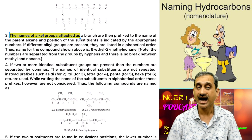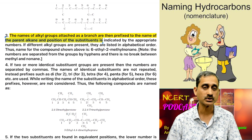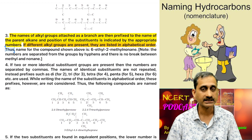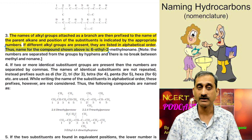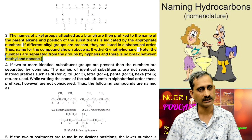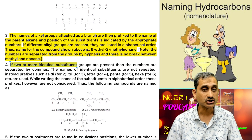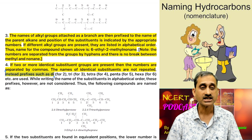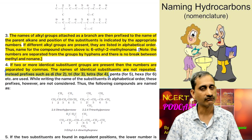The names of alkyl groups attached as a branch are then prefixed to the name of the parent alkane, and the position of the substituent is indicated by the appropriate numbers. If different alkyl groups are present, they are listed in alphabetical order. Thus, the name for the compound shown above is 6-ethyl-2-methylnonane — note that numbers are separated from the groups by hyphens and there is no break between methyl and nonane. If two or more identical substituent groups are present, the numbers are separated by commas, and prefixes such as di (for two), tri (for three), tetra (for four), penta (for five), hexa (for six), etc. are used.